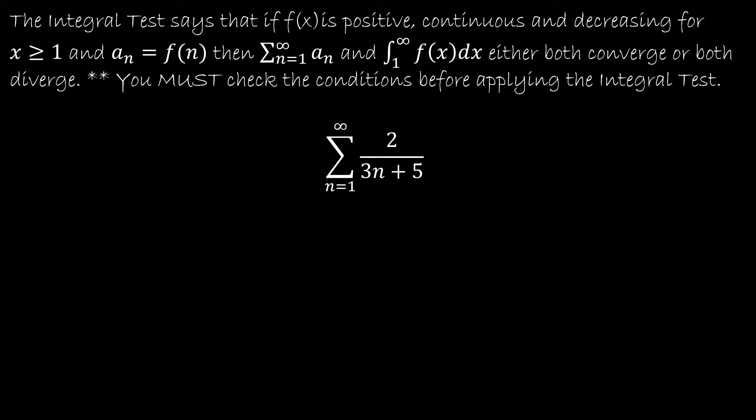The integral test basically says that if you have a function that's positive, continuous, and decreasing — and yes, you have to check all of those — for x greater than or equal to 1, and we can think of the sequence as being defined by some function, then both the series and the integral from 1 to infinity either both converge or both diverge. So before using the integral test, I need to check: is it positive, is it continuous, and is it decreasing?